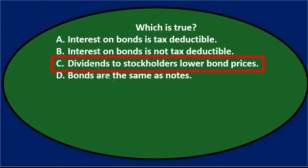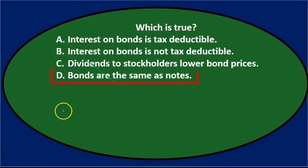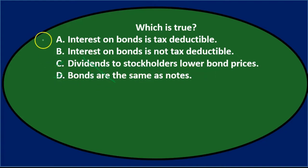Looking at C: dividends to stockholders lower bond prices — dividends don't have anything to do with bond prices. And D says bonds are the same as notes — that's not true, bonds are not the same as notes. So we're left with A and B.